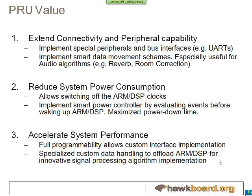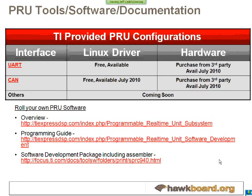There are some limitations: the PRU has a very simple architecture with very few instructions — no multiplies and no accumulates — which limits DSP-style processing. TI is providing a UART interface with a free Linux driver and a hardware board for extra UART ports. A CAN interface is coming soon as a reduced-speed CAN. TI also provides all the software needed, including a simulator, programming guide, and building-block examples in assembly to help you create your own PRU code.